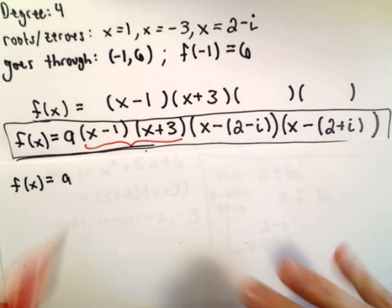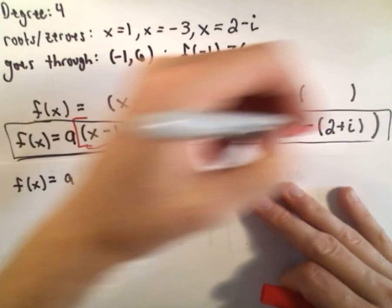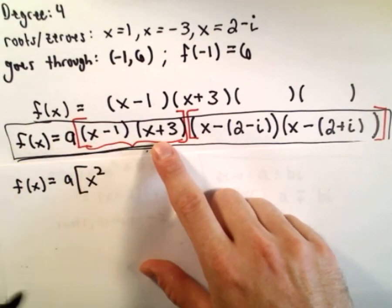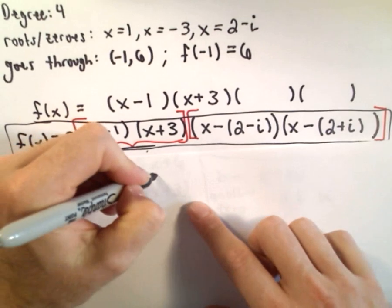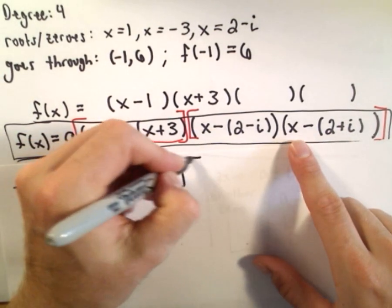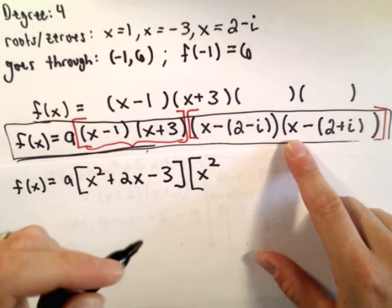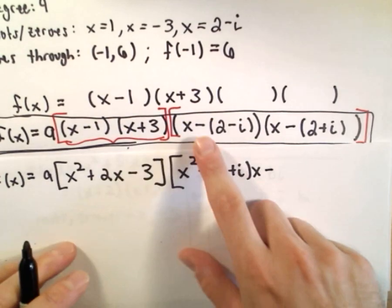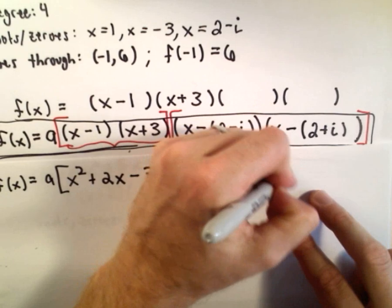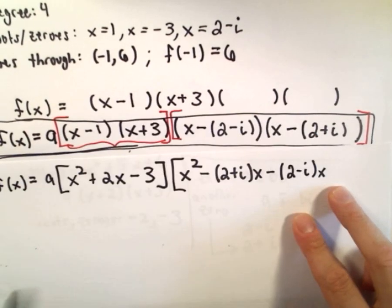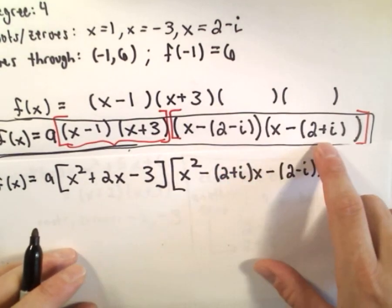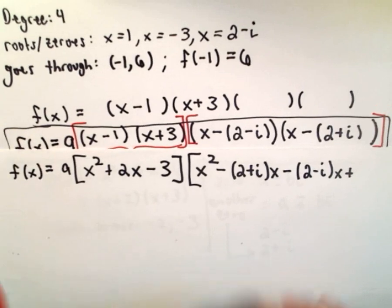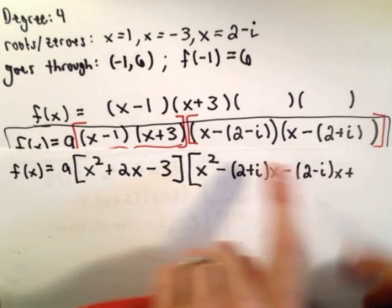I'm going to multiply the first two factors together, and then the last two factors together. For x minus 1 times x plus 3: x times x is x squared, we'll have plus 3x minus x which is plus 2x, and negative 1 times positive 3 is negative 3. So the first pair gives us x squared plus 2x minus 3.